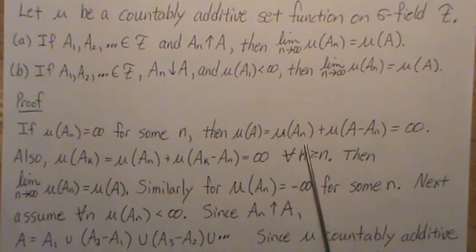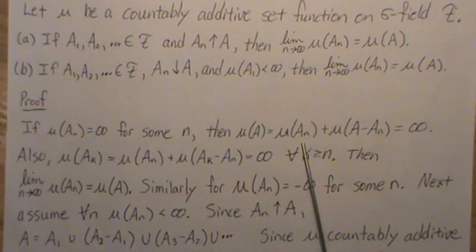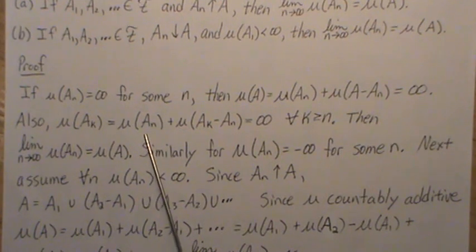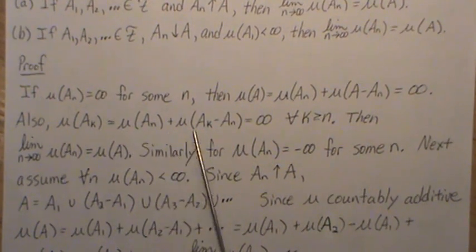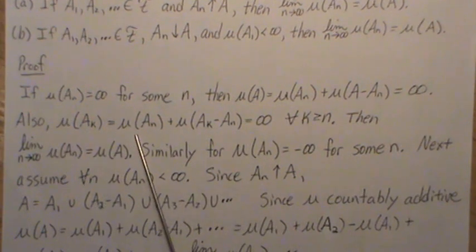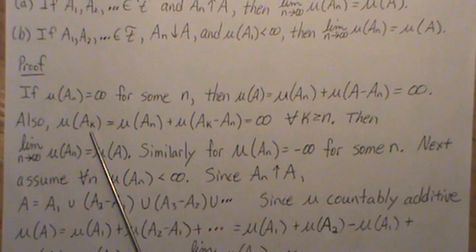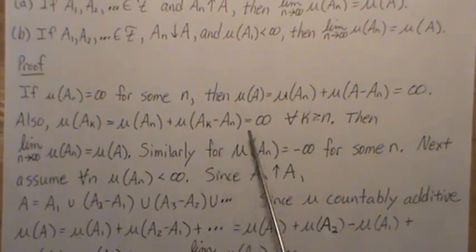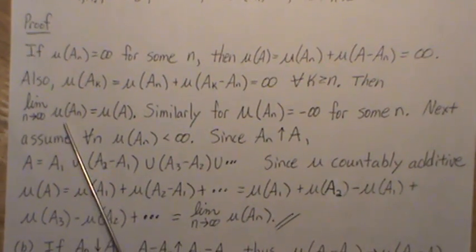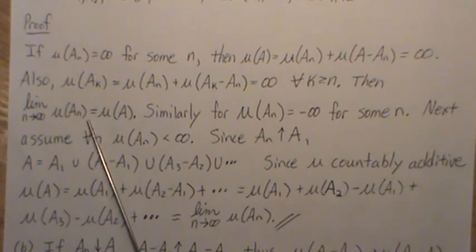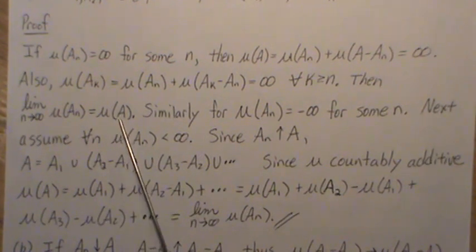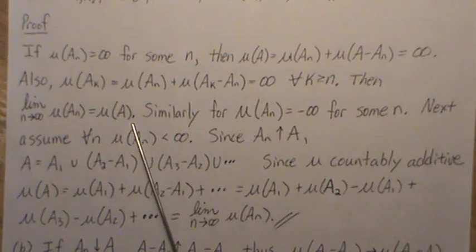If An is infinite then that's infinity. Also the measure of Ak equals — since they're increasing sets — the measure of An plus the measure of Ak minus An, and since the measure is countably additive it's the sum of those two measures, because An union (Ak minus An) equals Ak and they're disjoint, for all k greater than N. So the limit of the An's after some point is infinity, and that equals the measure of A — so this property does hold.